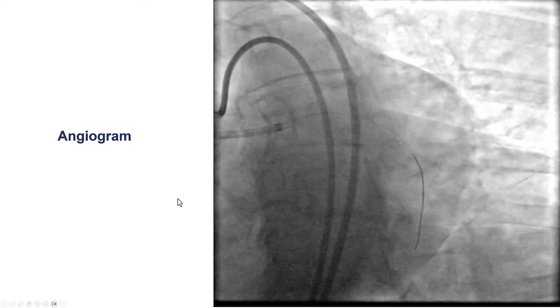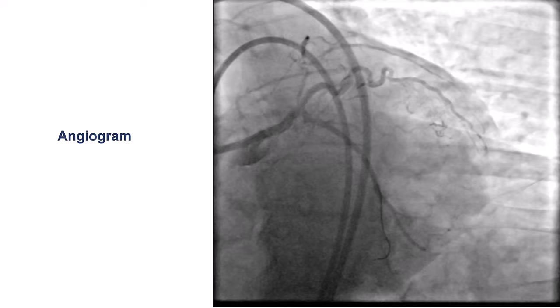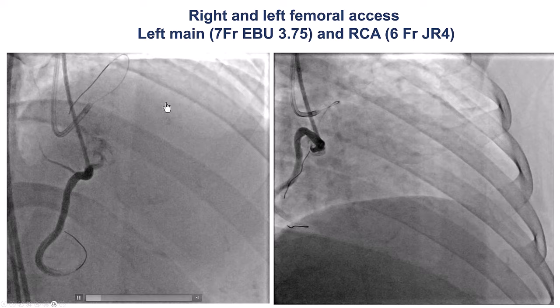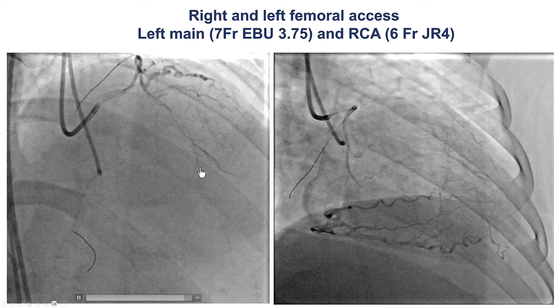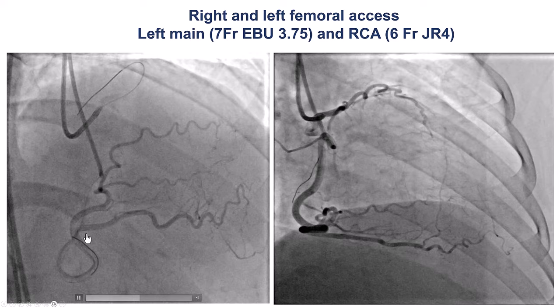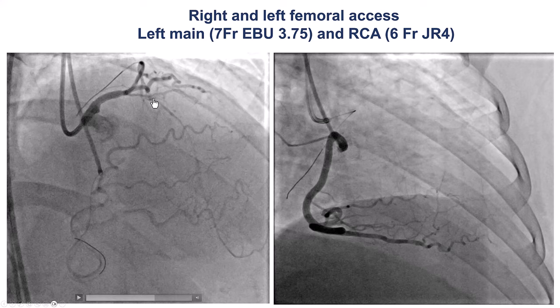This is the coronary angiogram. The LAD is diffusely diseased, and there's a very short occlusion after the takeoff of a diagonal branch. These are different projections with dual injection. We do have some septal collaterals filling the mid-LAD, although there may be some bridging collaterals also filling the LAD in the antegrade direction. This appears to be a fairly short CTO, maybe 5 mm in length, with a diffusely diseased distal vessel.